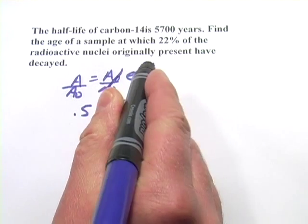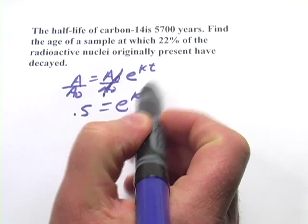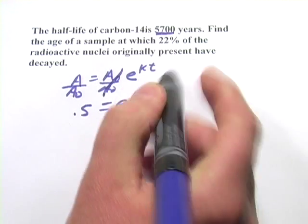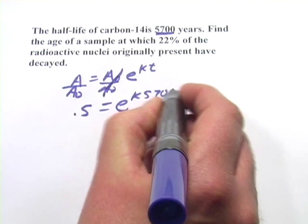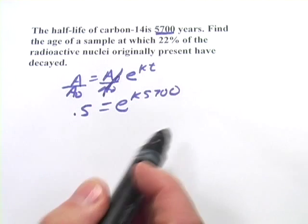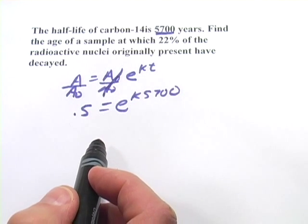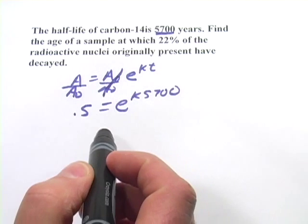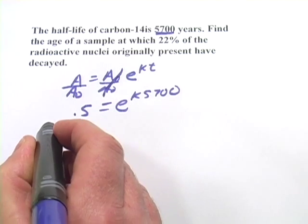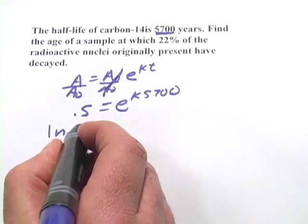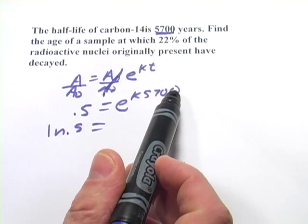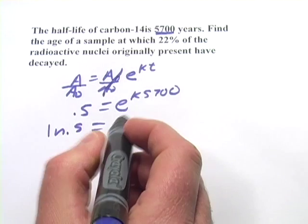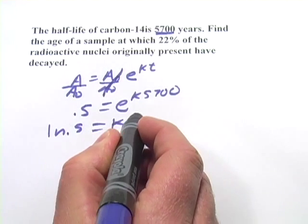So we've got 0.5 equals e to the k times t, and t here, the half-life, is 5,700 years. So now we've got everything we need here to be able to solve for k. And, of course, we've got an exponential equation here. So what we're going to do is take the natural log of both sides. So we have the natural log of 0.5. And when you take the natural log of e to something, you just get that power. So the natural log and the e kind of cancel out.